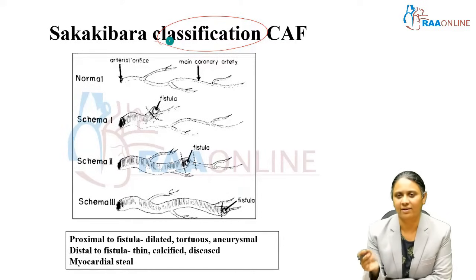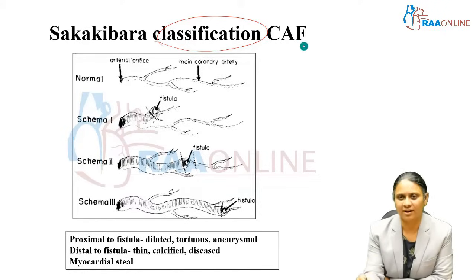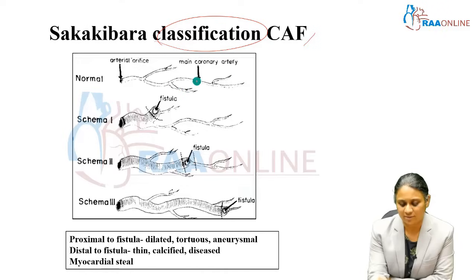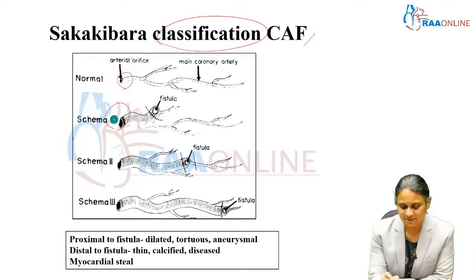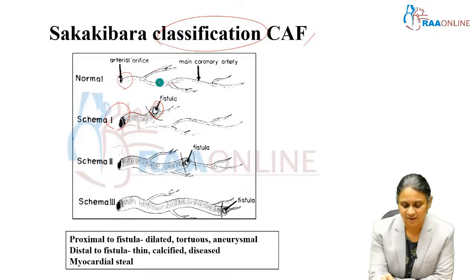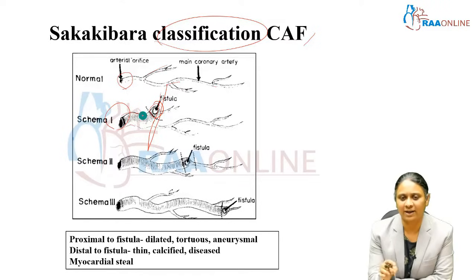The earlier classification, now reclassified into only two schemas — proximal and distal — is the Shakakibara classification of coronary arterial fistula. A normal artery shows the normal caliber and branching pattern. In the first type, the coronary artery is dilated from its origin, marking the beginning of the fistula's tract, which divides the vessel into proximal and distal portions relative to the fistula.